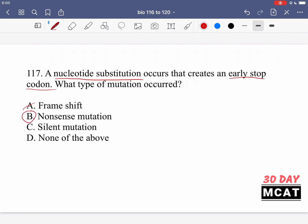It's not a silent mutation, option C. That's incorrect. A silent mutation is when you do have a mutation, but because of multiple codons corresponding to the same amino acid, it can still lead to the same final amino acid product and therefore you don't see any big change in the protein. So it doesn't really have an effect. D is also incorrect. It's not none of the above. B is the correct answer.